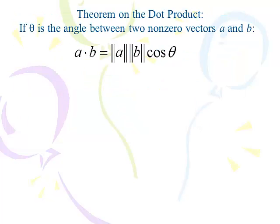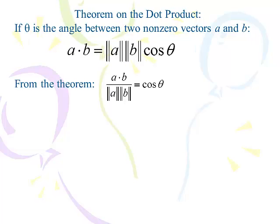Now we have the theorem of the dot product: if theta is the angle between two non-zero vectors, then the dot product equals the product of their magnitudes times the cosine of the angle. Since we normally know the dot product and magnitudes but want the angle, we solve for cosine theta. Dividing both sides by |a| and |b| gives us the formula on the formula sheet: cosθ = (a·b) / (|a|·|b|). I leave the magnitudes as square roots rather than decimal equivalencies.